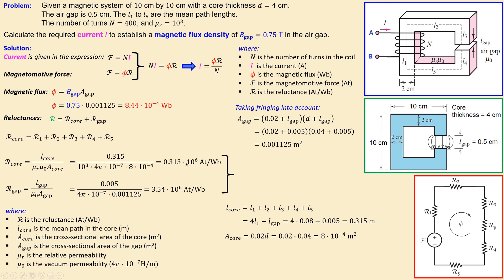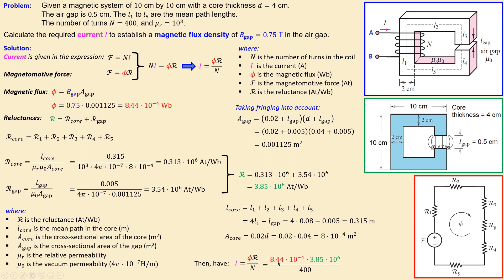Combining R_core and R_gap gives a total reluctance of 3.85 × 10⁶ ampere-turns per weber. Substituting this and the flux φ = 8.44 × 10⁻⁴ into I = (φ · R_total) / N and dividing by N = 400 turns, the required current is 8.12 amperes.